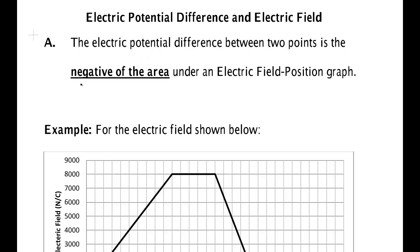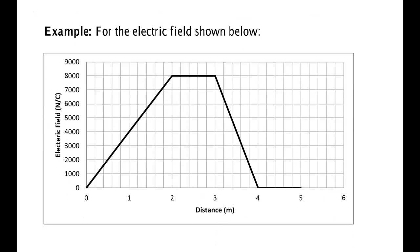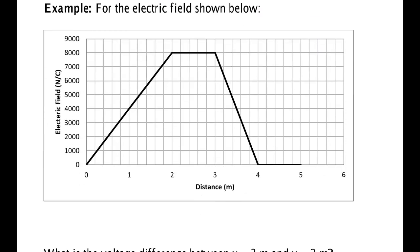The way to do that is: the electrical potential difference between two points is the negative of the area under an electric field-position graph. So if you're given a graph of the electric field as a function of position, we find the area and take the negative of it. Here's the electric field shown — you see the electric field in Newtons per coulomb.